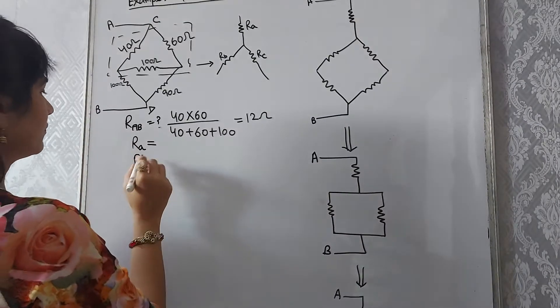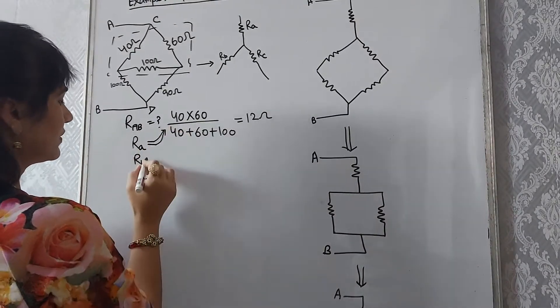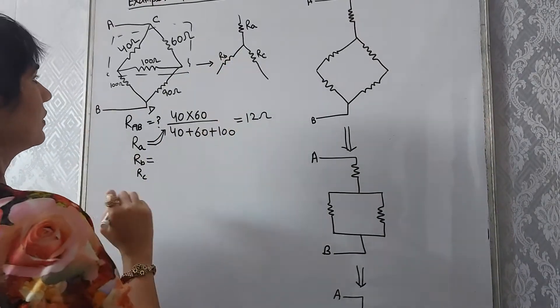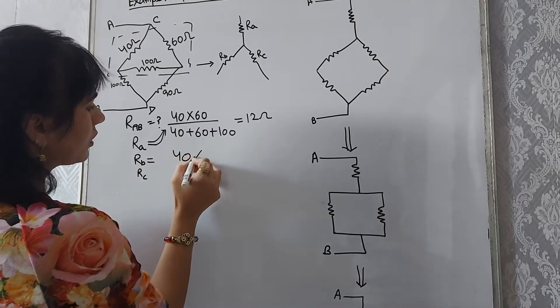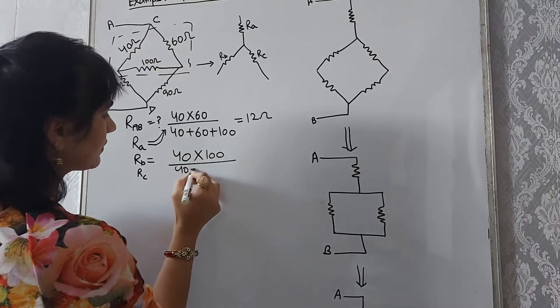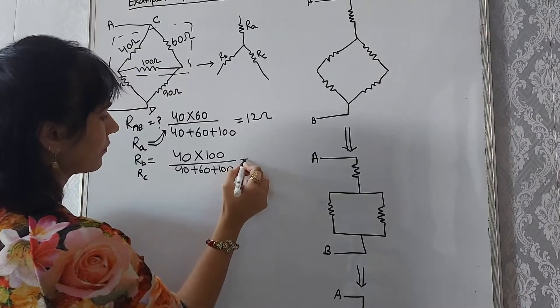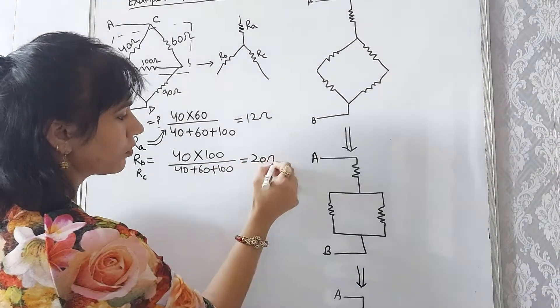Similarly, this is our value A. Second, Rb. Rb is equals to 40 into 100 upon the total resistances. So this value is 20 ohm.